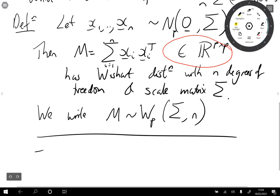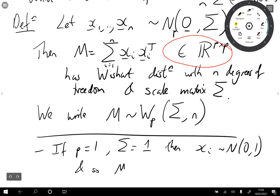Now this is related to the chi-squared distribution. If p is 1 here, and if sigma is just 1, then the xi's are just normal 0,1 random variables. And so M here is just the sum of normal 0,1 random variables squared. So this has a chi-squared n distribution. So there's a link between chi-squared and Wishart.